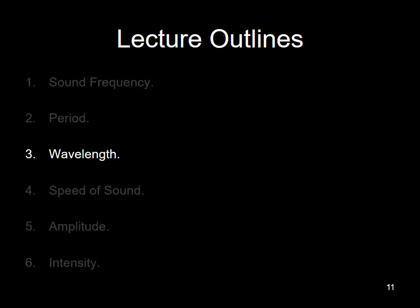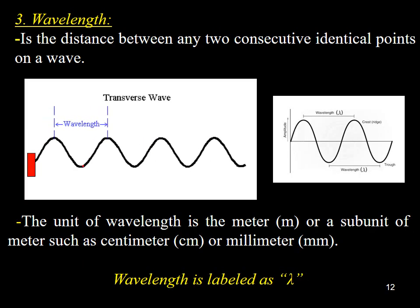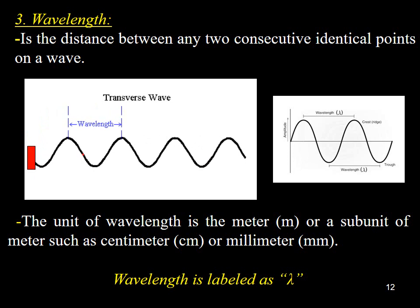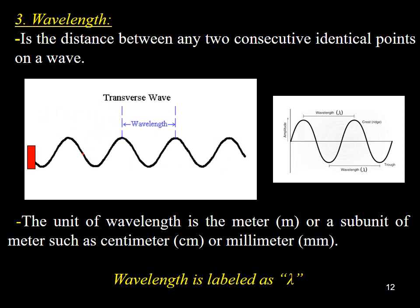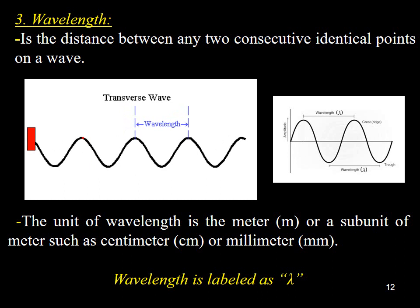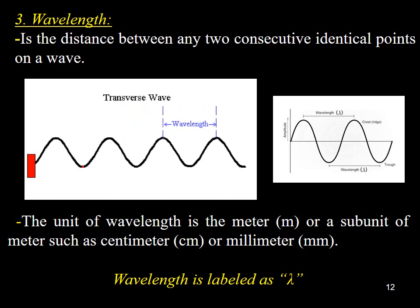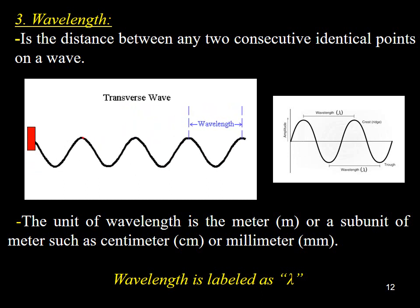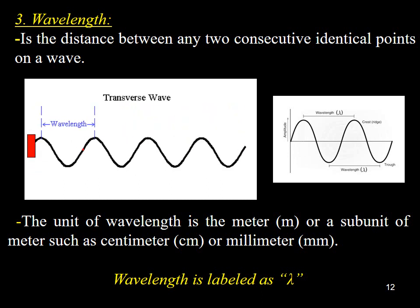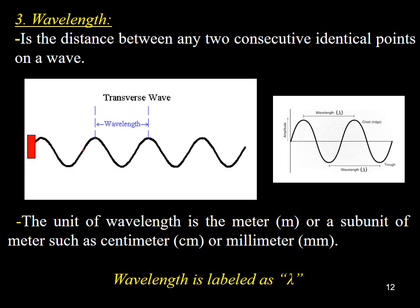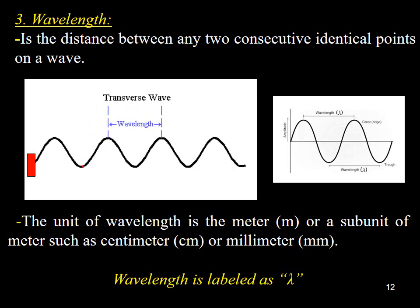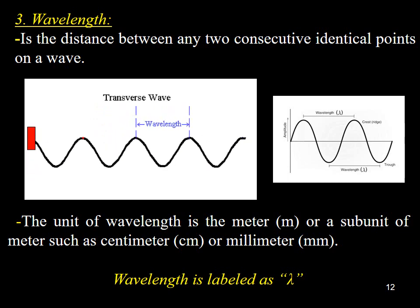A wave's wavelength describes how long the wave is. A wave's wavelength is the distance between any two consecutively identical points on the wave. Please see the attached illustrations. The wavelength unit is the meter or a subunit of the meter. Finally, wavelength is denoted by the symbol lambda.